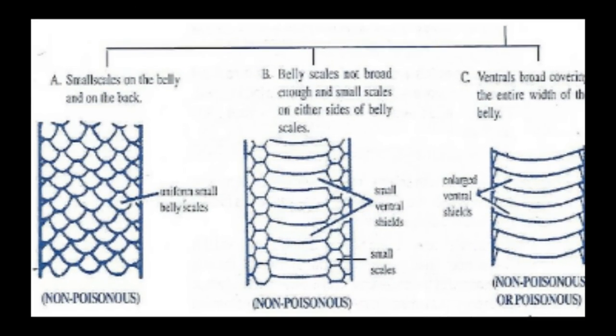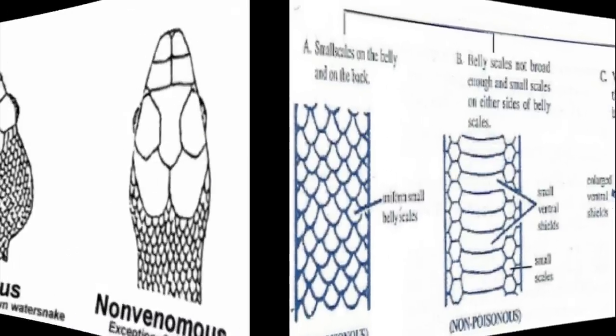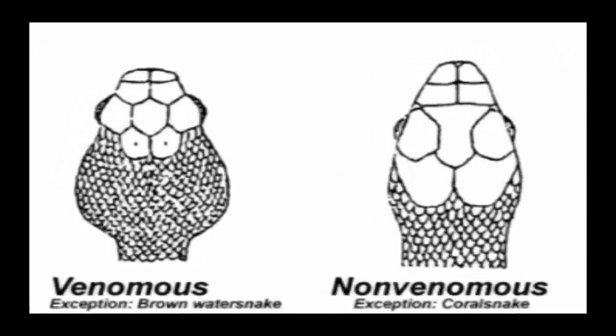Then come to its belly scales. If the belly scales are small and continuous with the dorsal scales, then they are non-poisonous. If the belly scales do not fully cover the belly, it could also be non-poisonous. Now coming to its head scales — if the head scales are small and the head is triangular, with or without a loreal pit, then it is poisonous.